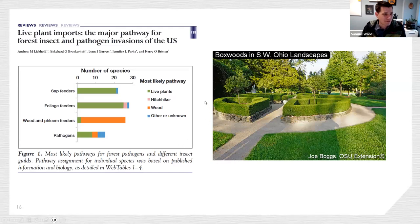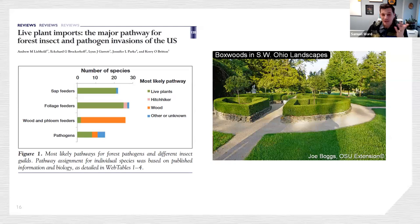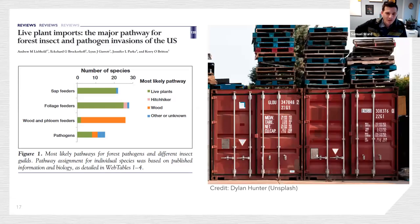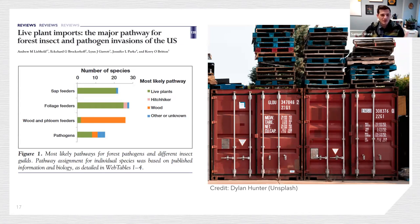Boxwoods are a good example — we've had lots of non-native insects and pathogens show up on boxwood that presumably would not be here without the planting of boxwood, given that box tree moth doesn't have native hosts outside of this planting in the United States. Wood and phloem feeders, on the other hand, are largely going to show up on wood and wood packaging. That's the first step — arrival. In order to establish once you've arrived, a major determinant is propagule pressure: essentially the number of individuals of a given species that have arrived at a certain location at a certain time.